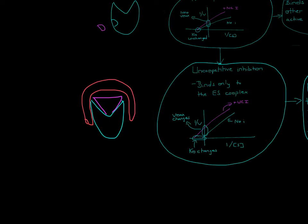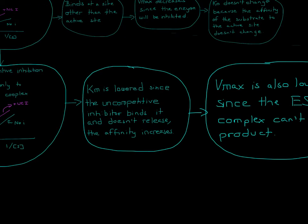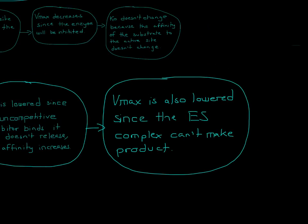So KM actually decreases and affinity increases because the inhibitor binds the complex and doesn't release. However, Vmax is lowered because the enzyme is put out of commission and cannot make product. I hope that helped — thanks for watching.